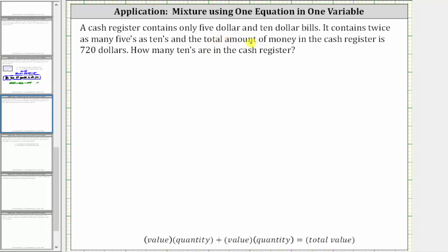The cash register contains only $5 and $10 bills. It contains twice as many fives as tens, and the total amount of money in the cash register is $720. How many tens are in the cash register?